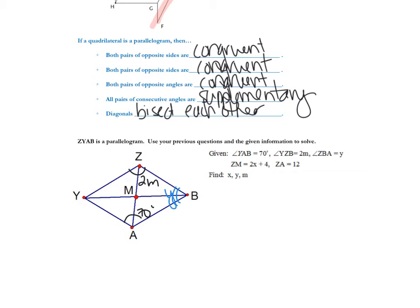Let's draw that in. And then we have ZM, which is right here, equals 2X plus 4. And we have ZA — let's mark that in a different color — ZA is 12. All right, so let's go ahead and start finding some information. I'm going to find M first because the black pen sticks out to me.